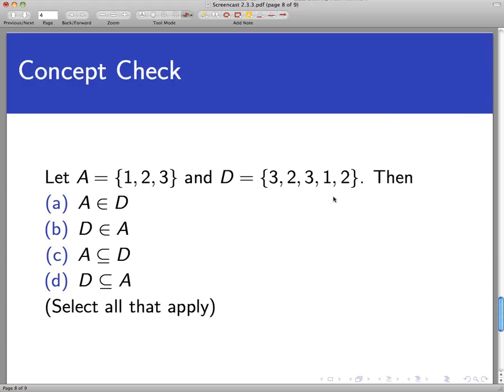So let's have a concept check to see how well you're understanding these notions here. Let A be the set we've seen before, 1, 2, and 3. And D is a new set that consists of 3, 2, 3, 1, 2. Then which of these four statements is true? And you can just select all that apply. There could be more than one statement that is true. So look at those options and pause the video and check all that apply.